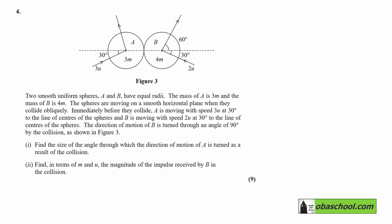The spheres are moving on a smooth horizontal plane when they collide obliquely. Immediately before they collide, A is moving with speed 3u at 30 degrees to the line of centers of the spheres, and B is moving with speed 2u at 30 degrees to the line of centers of the spheres. Again, all of this can be seen in the diagram.